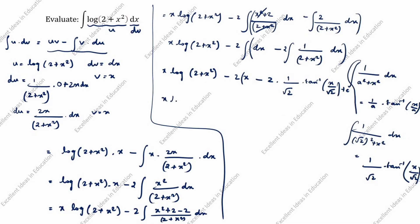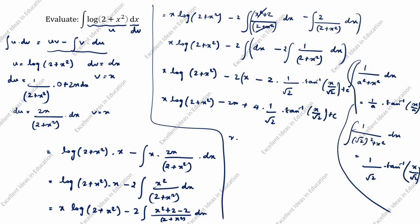Next, x·log(2 + x²) minus — multiplying inside: 2 into x is 2x — then minus times minus gives plus, so 2 times 2 is 4, into 1/root 2 into tan inverse of x/root 2, plus c. Simplifying: x·log(2 + x²) minus 2x, and 4 into 1/root 2 — the 1/root 2 simplifies — giving root 2 into tan inverse of x/root 2, plus c. This is the answer.